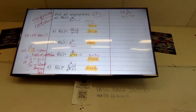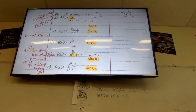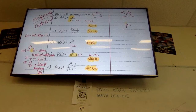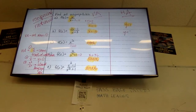Let's do these together. For letter A, I have x on top and x on bottom — those are the same — so the horizontal asymptote is y equals 1. When we write horizontal asymptotes, we do y equals; verticals are x equals. The plus one doesn't matter — you only look at the leading coefficients. For letter B, I've got 2 over 1, so y equals 2.